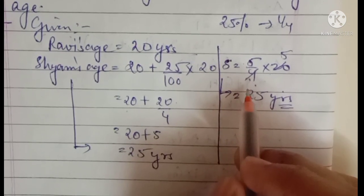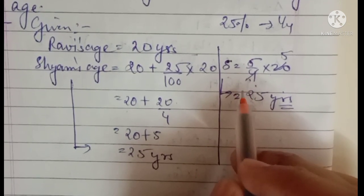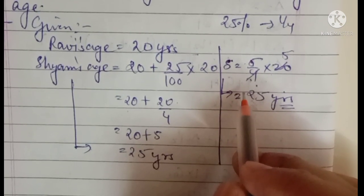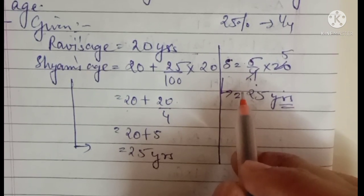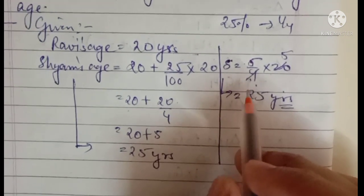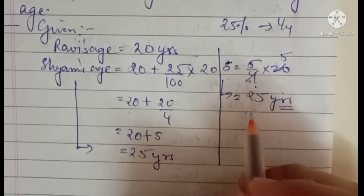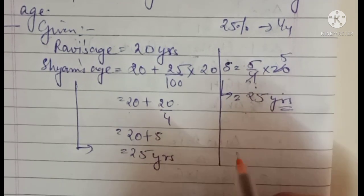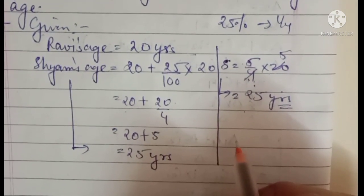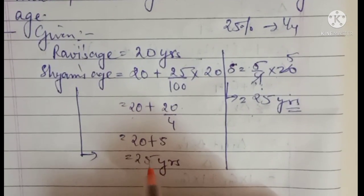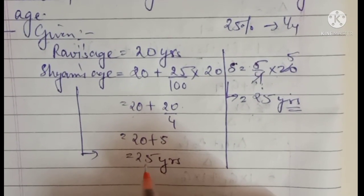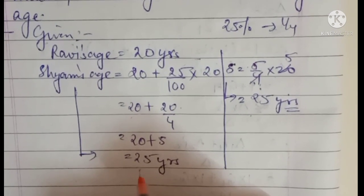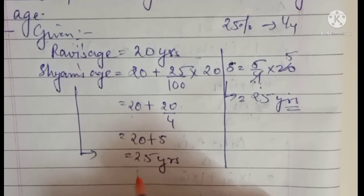Similarly, if the question says 25% lesser, then you write 3/4. So 3/4 of 20 equals 15. That is the difference — why I wrote 5/4 for greater and 3/4 for lesser. 5/4 means it is more, 3/4 means it is less. You need to remember this.